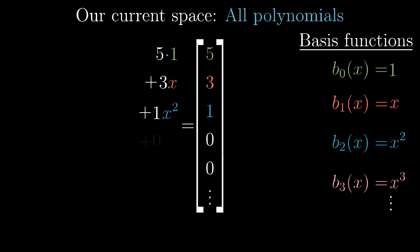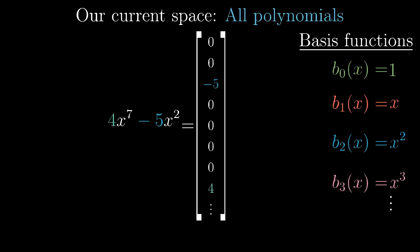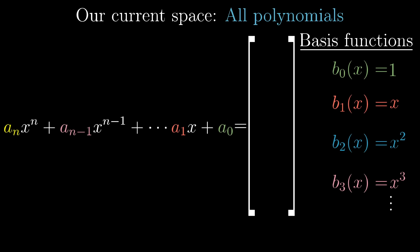You'd read this as saying that it's 5 times the first basis function, plus 3 times that second basis function, plus 1 times the third basis function, and then none of the other basis function should be added from that point on. The polynomial 4x to the seventh minus 5x squared would have the coordinates 0, 0, negative 5, 0, 0, 0, 0, 4, then an infinite string of zeros. In general, since every individual polynomial has only finitely many terms, its coordinates will be some finite string of numbers with an infinite tail of zeros.